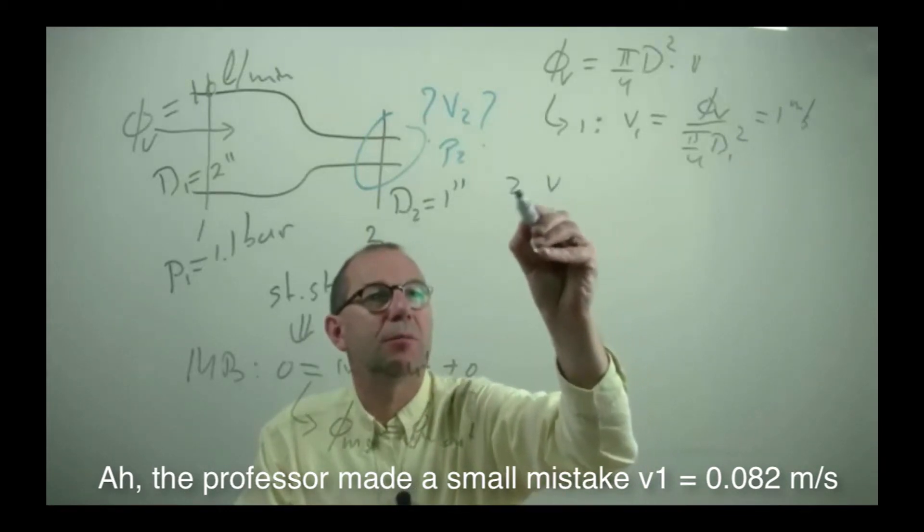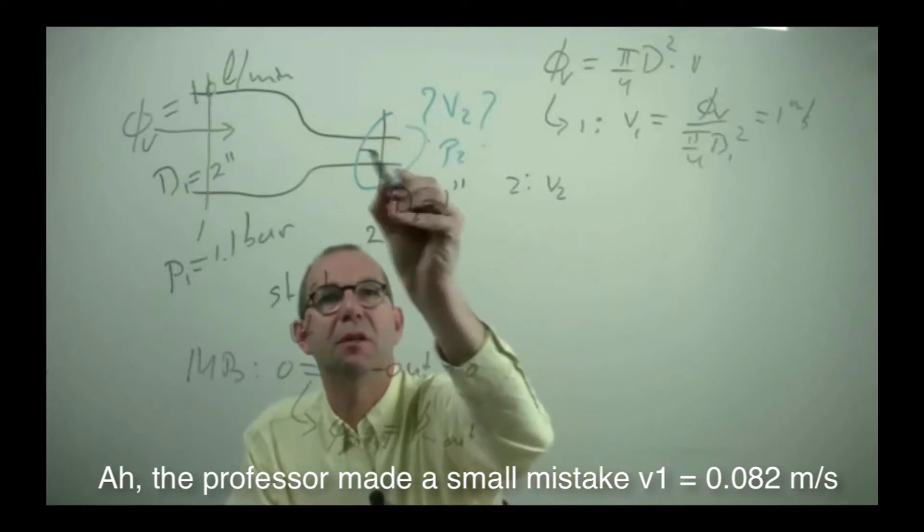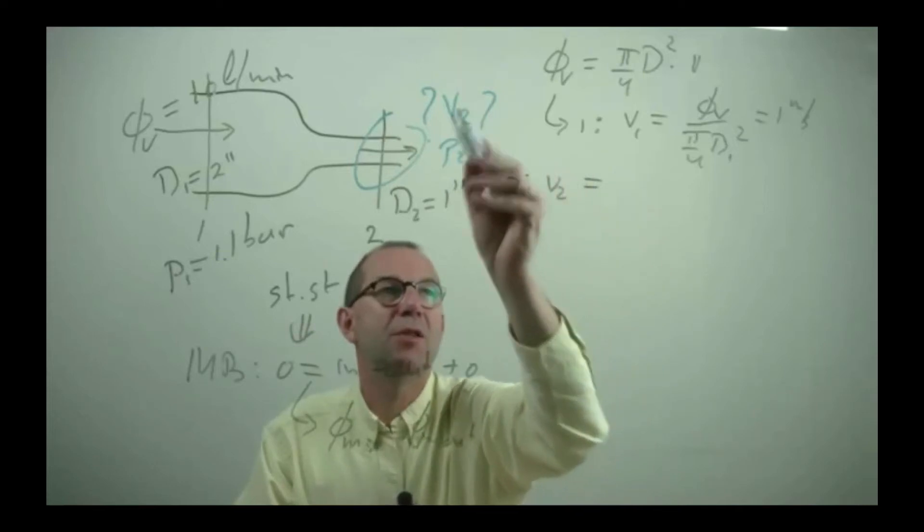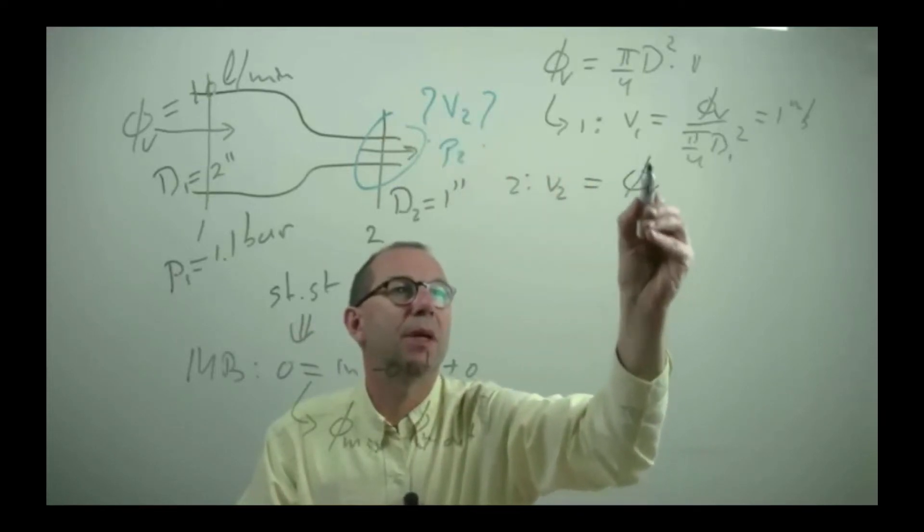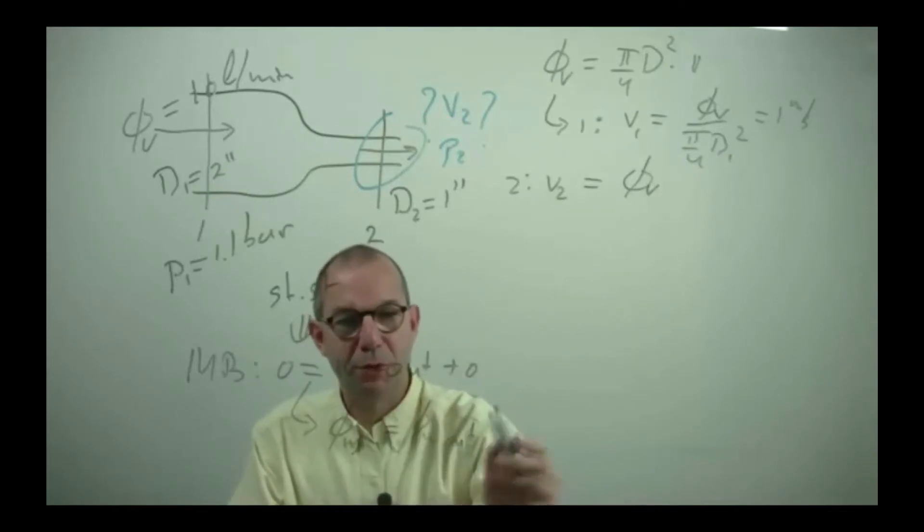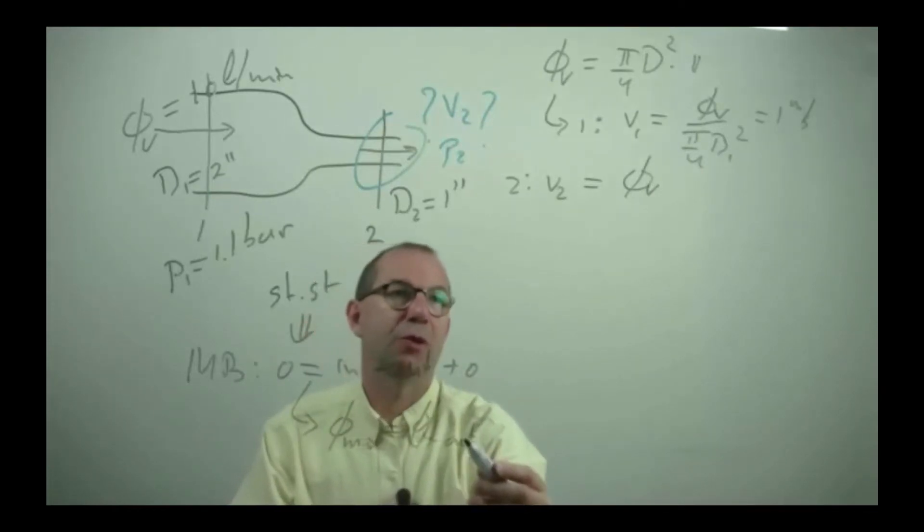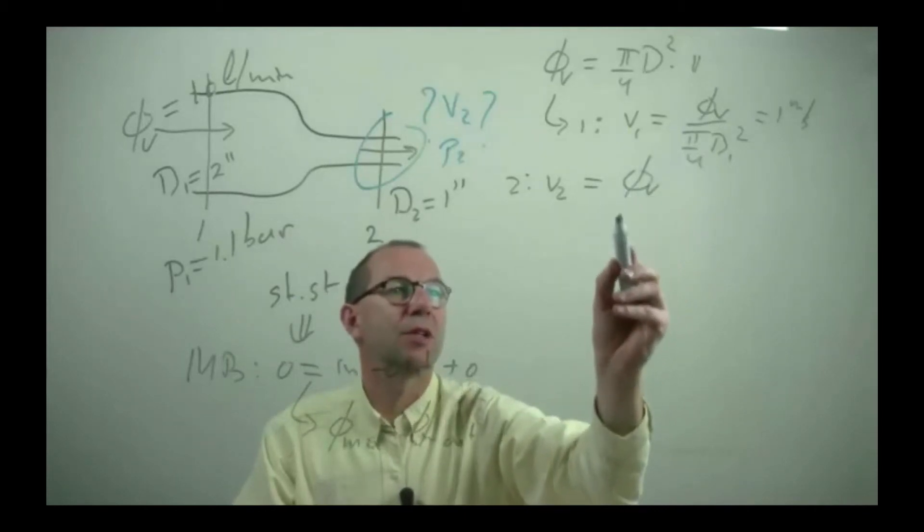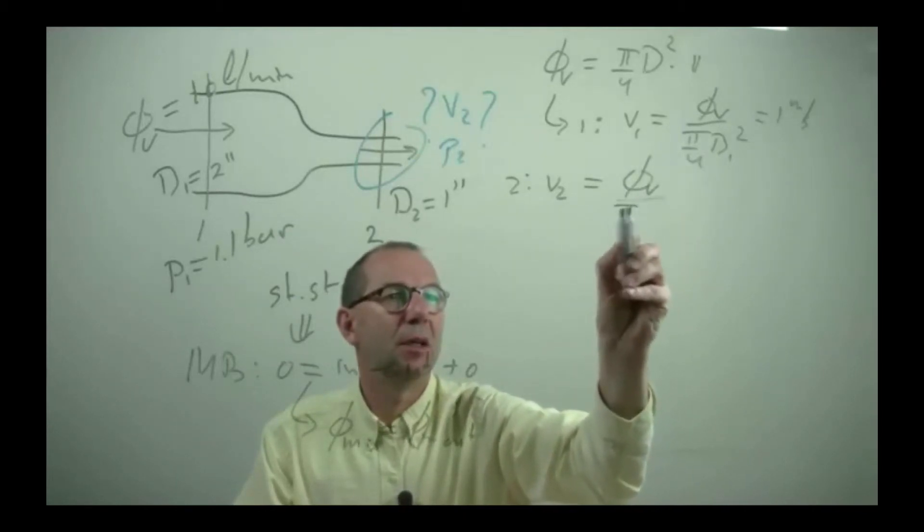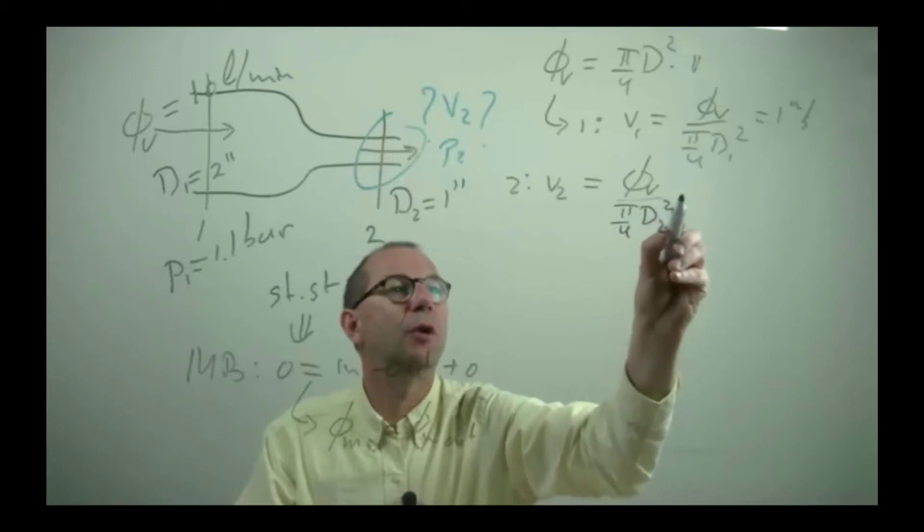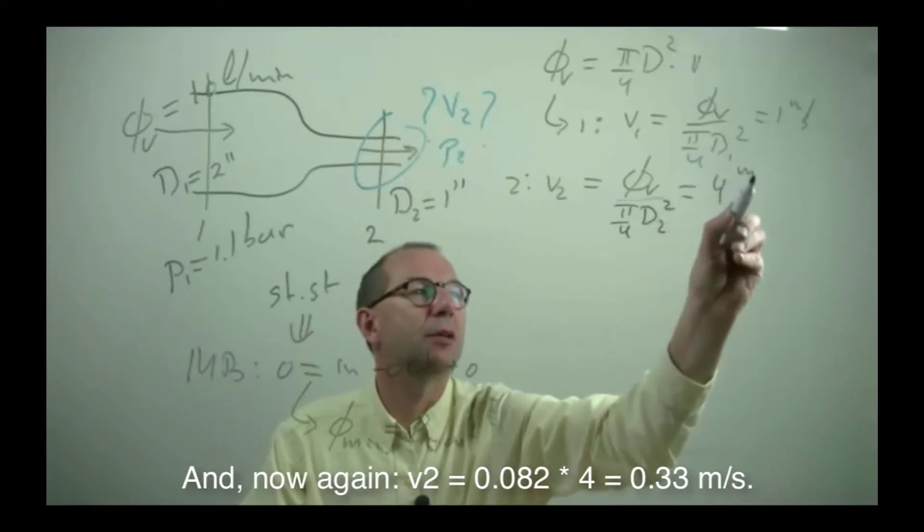V2 at position 2 here, one that I would like to know. Can we compute it in a similar way? It is the volume flow there. But that's the same as the volume flow at point 1, which I learned from the steady state mass balance. Density of water doesn't change. So if the mass flows are the same then the volume flows are the same. But obviously the area is reduced by a factor of 4 and thus the velocity goes up by a factor of 4.